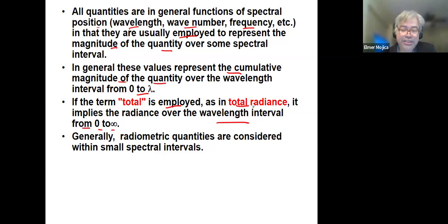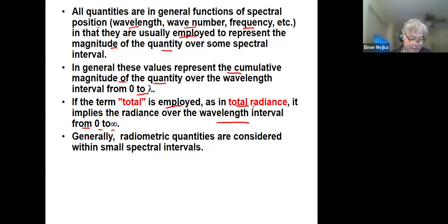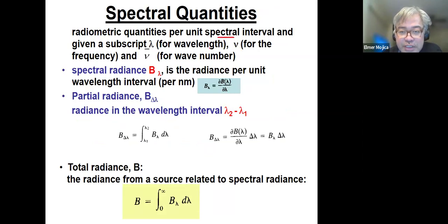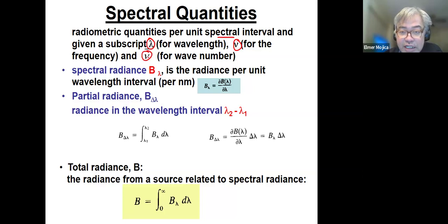Generally, radiometric quantities are considered within a small spectral interval. The radiometric quantities per unit spectral interval are given a subscript lambda for wavelength, V for frequency, and another form for wave number.